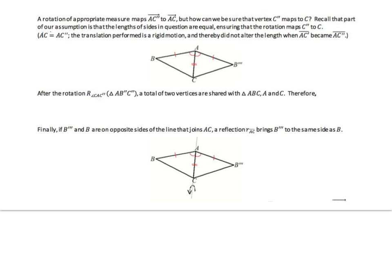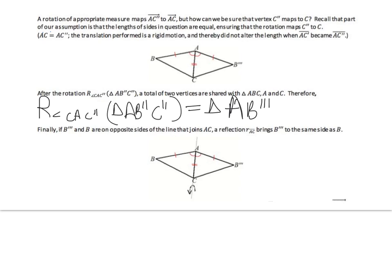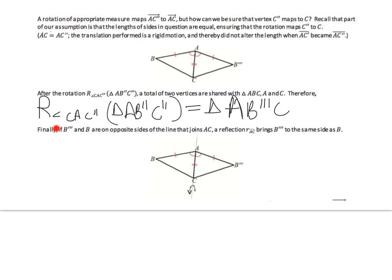We write: the rotation about angle C–A–C'' of triangle AB''C'' equals triangle AB'''C. Finally, if B''' and B are on opposite sides of the line joining AC, the reflection along AC brings B''' to the same side as B. This reflection brings the triangle over and we can see that they are congruent.